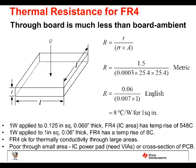Thermal resistance for FR4. For a square inch at one watt, it's only eight degrees C rise — that's for a 60 mil board. If it's a thinner board like 30 mils, it'd be half of that. So if you use the copper to spread the heat out, it'll go through the board quite well. If you have a PCB with components on both sides so you don't have full copper on top or bottom, you can put the copper planes inside the board and only pay a few degrees penalty in temperature rise.